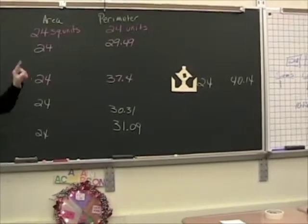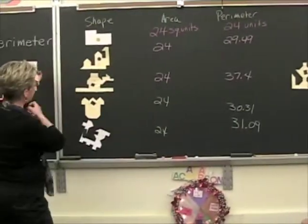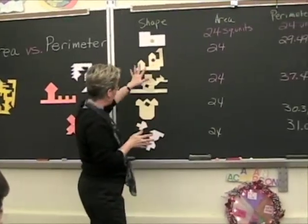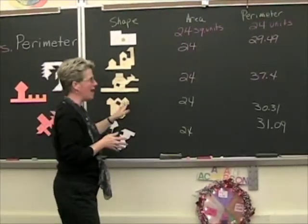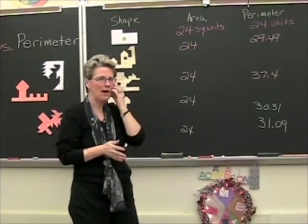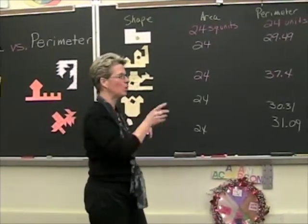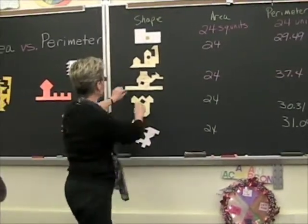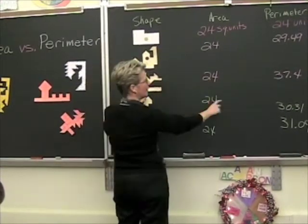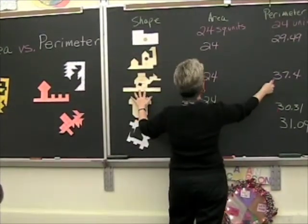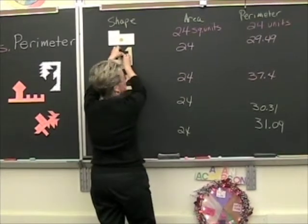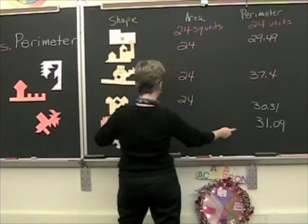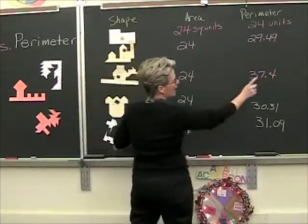What do you notice about these shapes? As the perimeter goes up, what happens to the shape on the bigger ones? Like this is a big long strip, and it has more open spaces. 37 was big, 31 was big, and that one was the biggest.